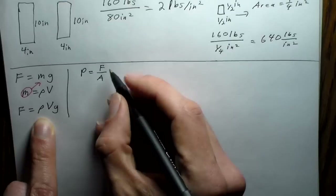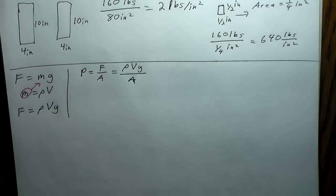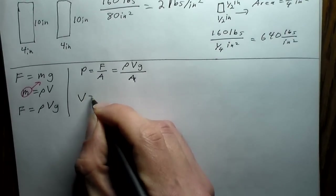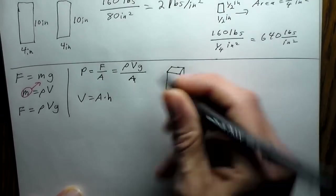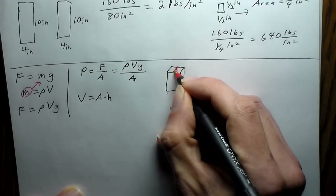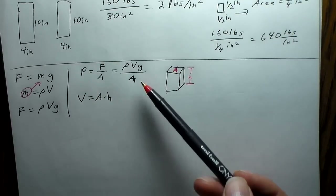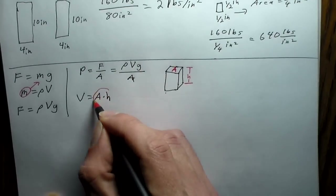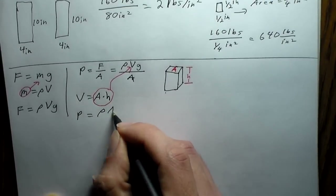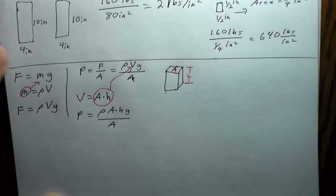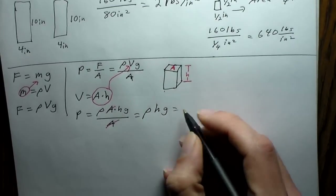Since pressure equals force over area, and we know volume equals area times height — if you have a box where the top has area A and some height, that's just area times height equaling volume — we can plug that in. So pressure equals density times area times height times gravity divided by area. The area cancels out, giving us: pressure equals density times height times gravity.